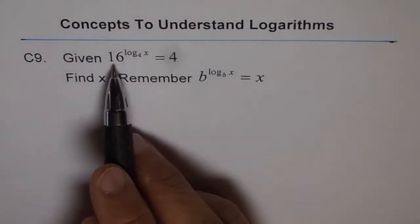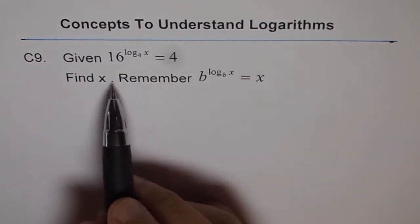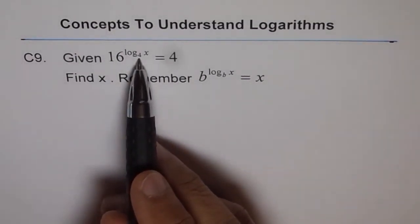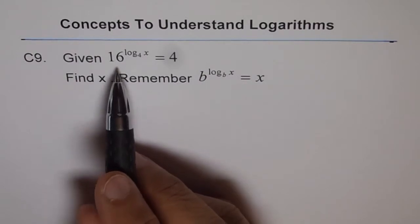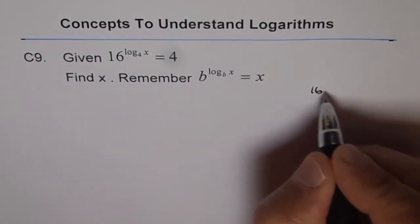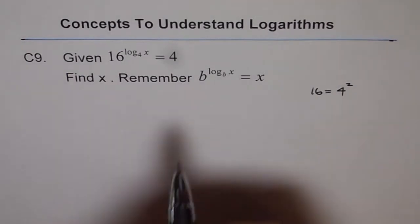We can write 16 as 4 squared, correct? Then you get the same base as 4. So that is the concept. In the given equation, we will replace 16 with 4 squared.